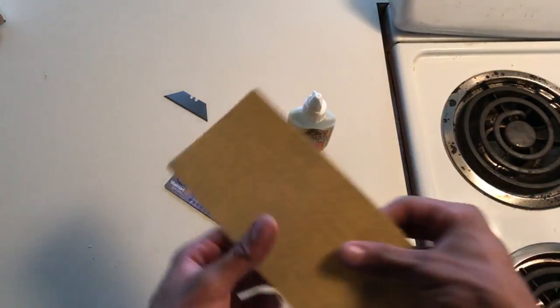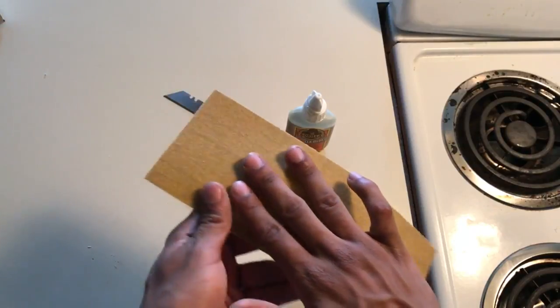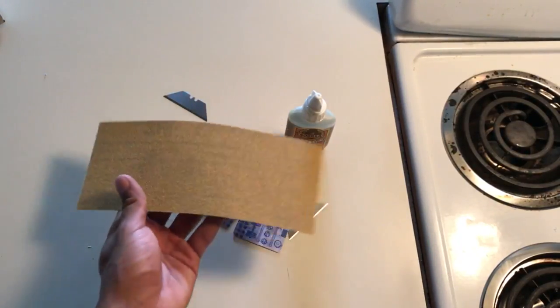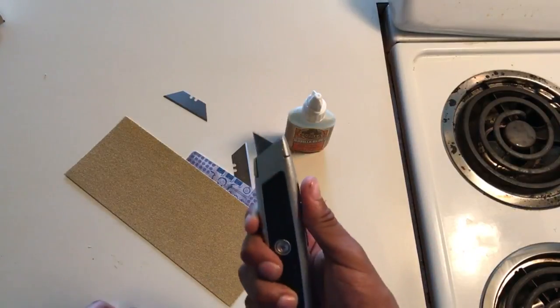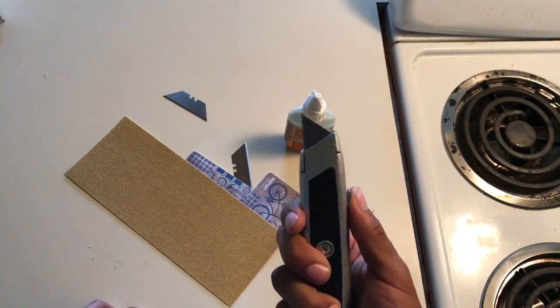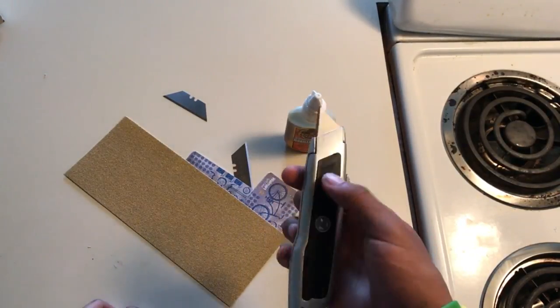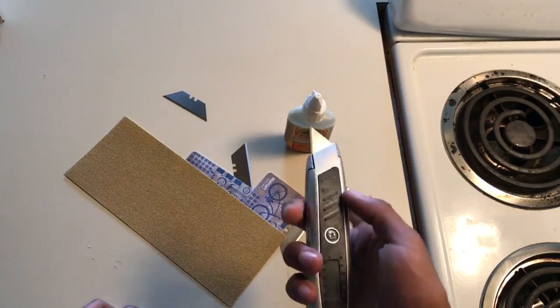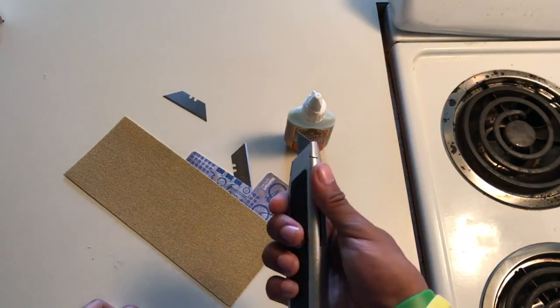You're going to need some sandpaper, some rougher grits so you can take away paint. You're going to need a knife. Any box knife will work or any X-Acto knife maybe. Just a small knife that can cut very finely.